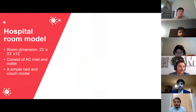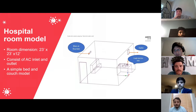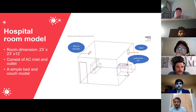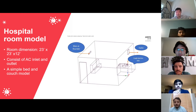The second half of the project focuses on virus simulation in the hospital ventilation room. The hospital room dimension is 23 by 23 by 12 feet, with one main airflow inlet from AC on the wall and one outlet vent on the opposite wall. The room is occupied with a simple couch and a bed model with a COVID-infected person lying on it. The bed model is designed so that cough droplets from the patient's mouth will be released upright along the outlet vent during coughing.